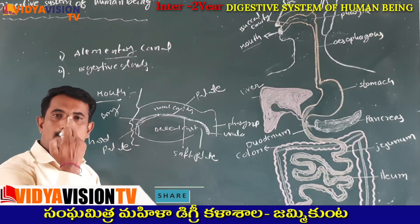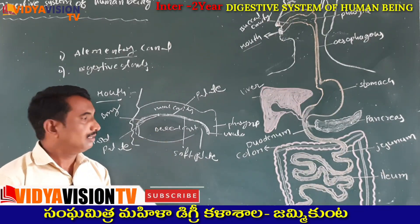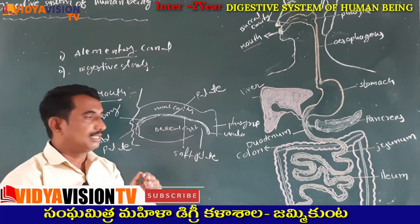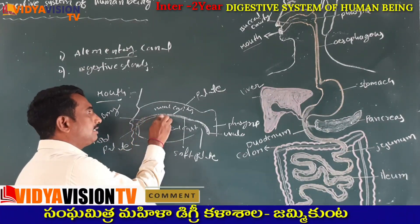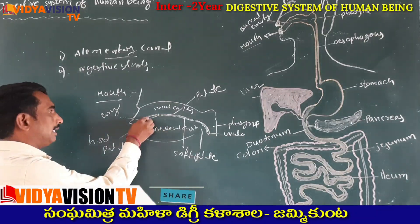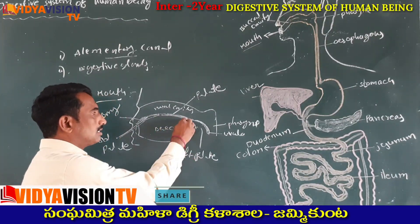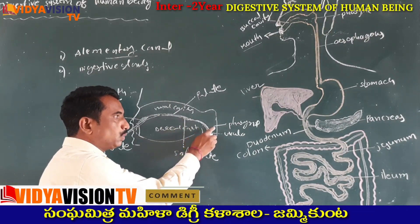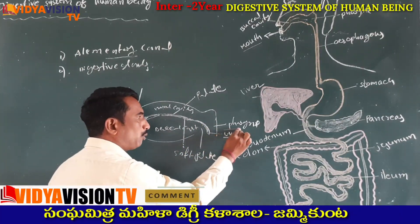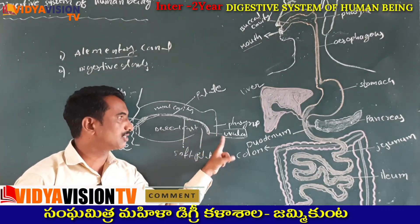To summarize: the mouth is bounded by the upper and lower lip. It opens into the buccal cavity, also known as the oral cavity. The roof of the buccal cavity is called the palate. The anterior side of the palate is a bony structure called the hard palate. The posterior of the palate is called the soft palate. The soft palate hangs down into the pharynx, and that hanging part is called the uvula.